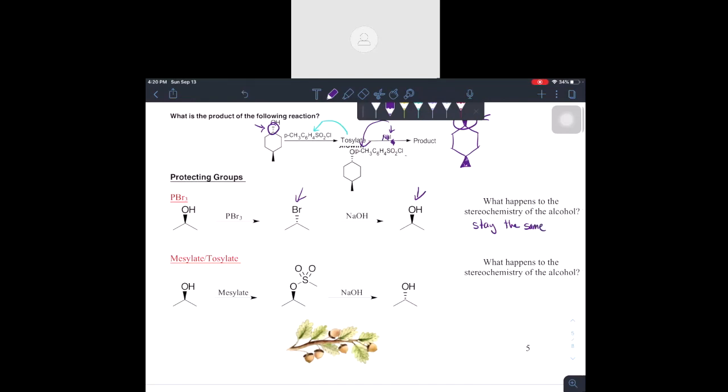Mesylate and tosylate, like I said, you want to skip the middle part, just know that it's going to invert at the end. So if you really don't want to do the middle step, just remember it that way. PBr3 protecting groups stay the same at the end. Mesylate and tosylate going to invert. And if you guys have any questions about that feel free to email me. If not, you know, practice problems, that's all I can say.